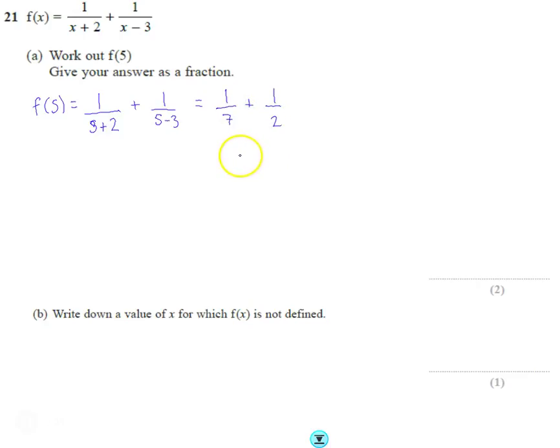So some of you, this is on the calculator paper, so some of you are just reaching for your calculators now to check it, but we can easily do this. This could come up on a non-calculator paper. Common denominator 14, so adding those fractions together is 9 out of 14. So that first bit is relatively straightforward.